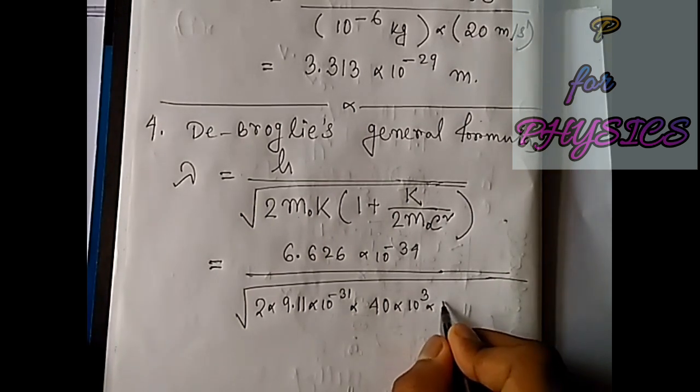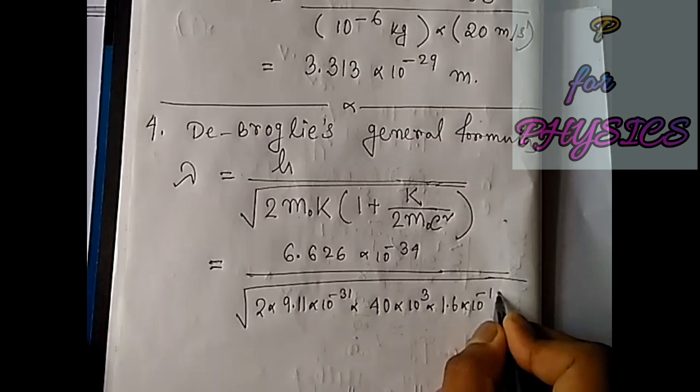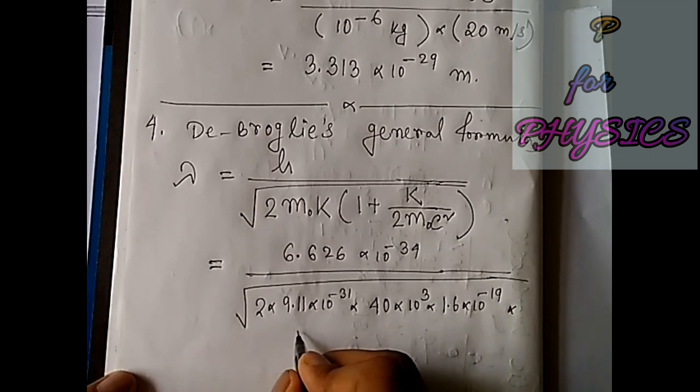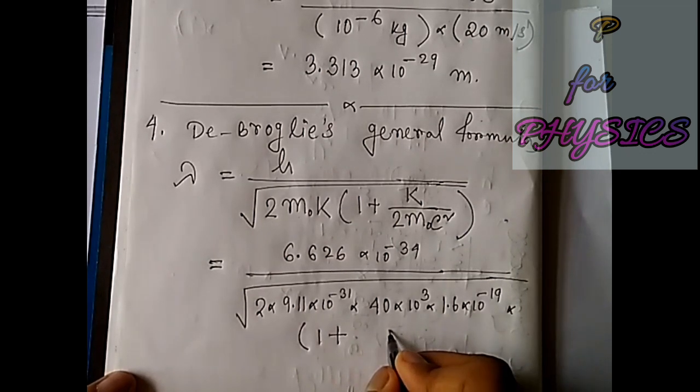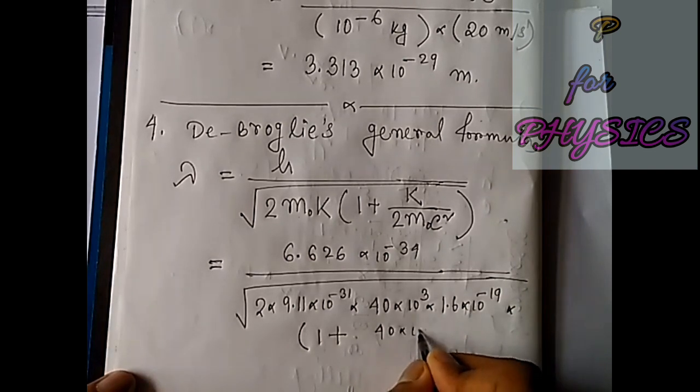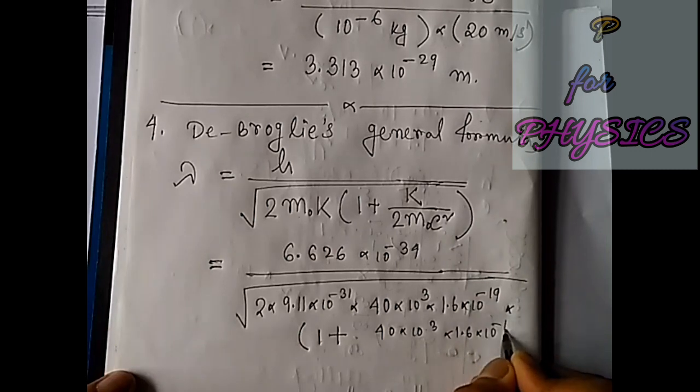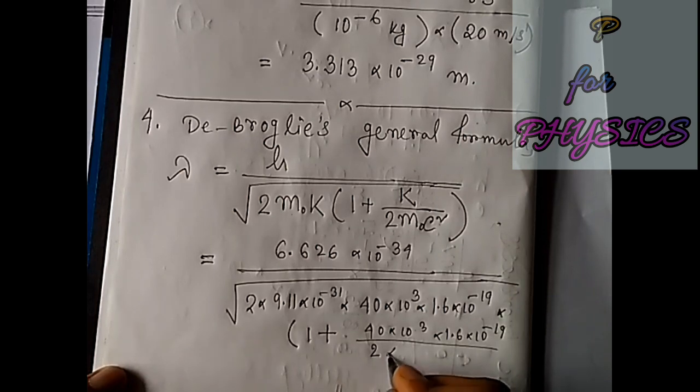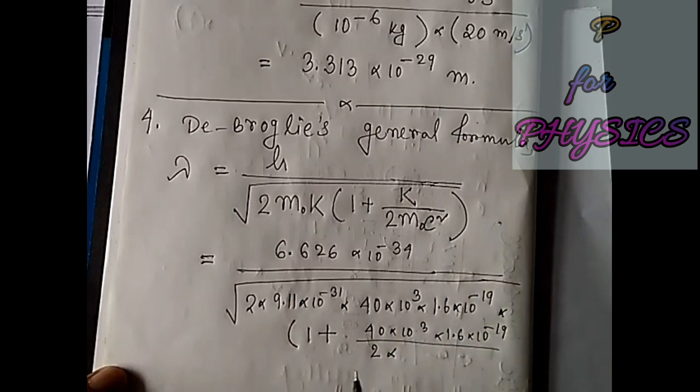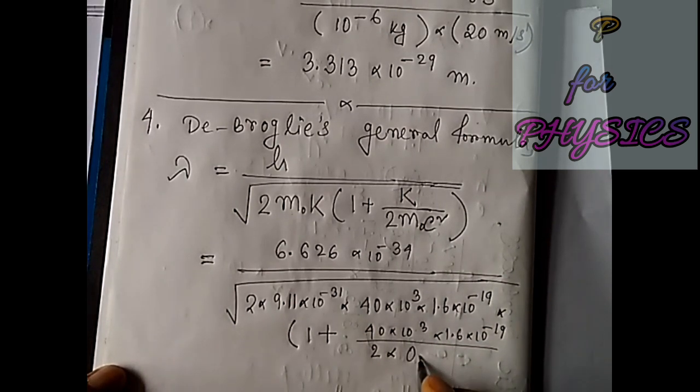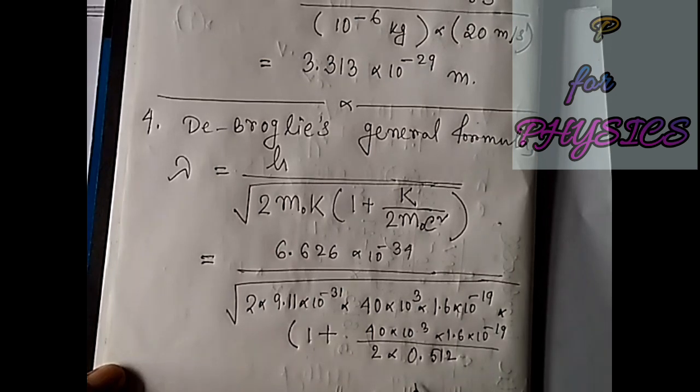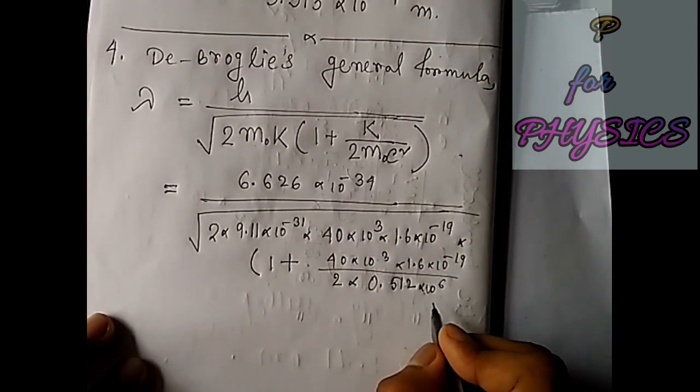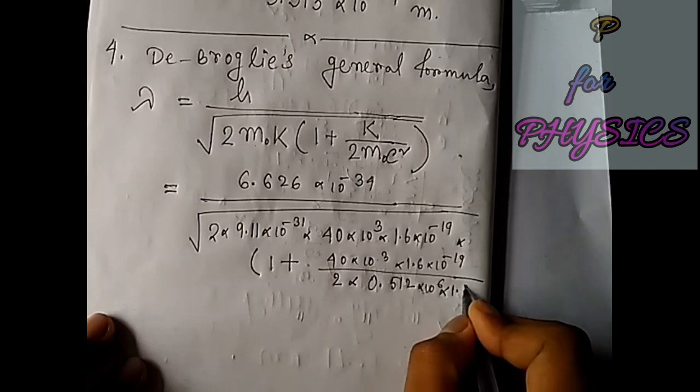40 times 10³ electron volts means 1.6 times 10⁻¹⁹, divided by 2 times - we know for the electron the m₀c² value, which is 0.512 mega electron volts, which is 10⁶, and electron volt means 1.6 times 10⁻¹⁹.